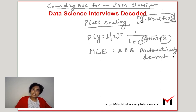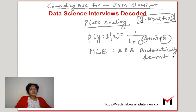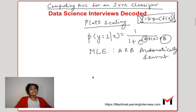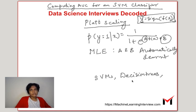Platt scaling is not the only way to do such calibration. Another technique is isotonic regression, and there are a few other techniques as well. Sklearn offers both Platt scaling and isotonic regression. It also turns out this is not specific to SVM — though Platt scaling was originally invented for SVM, it is applicable to several other models such as decision trees.